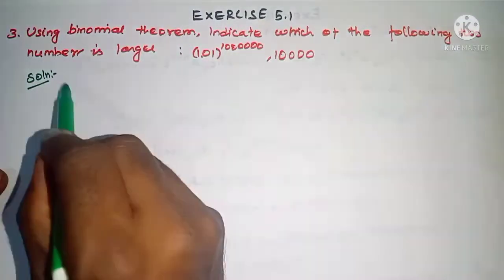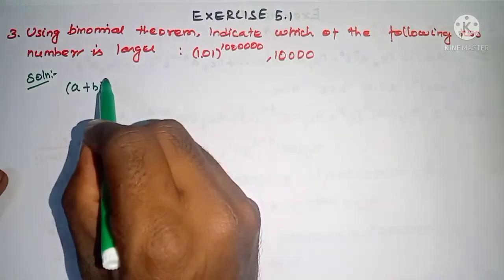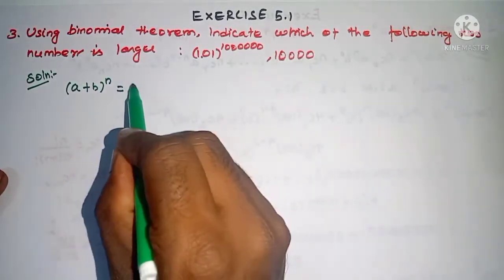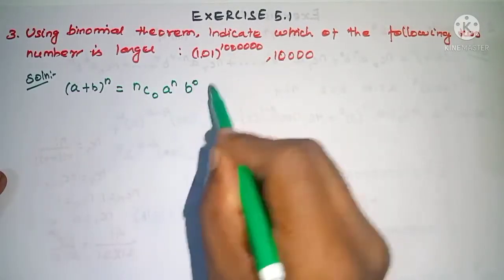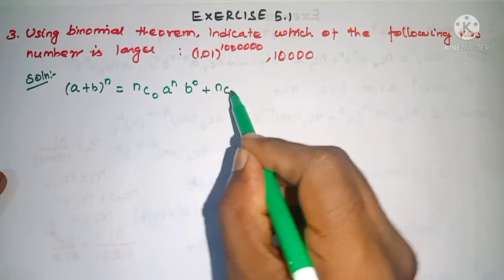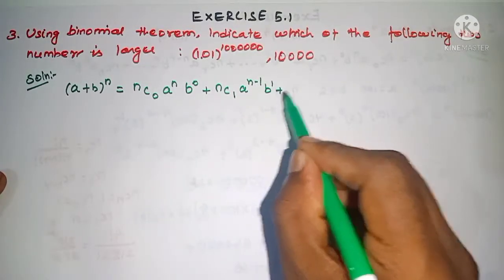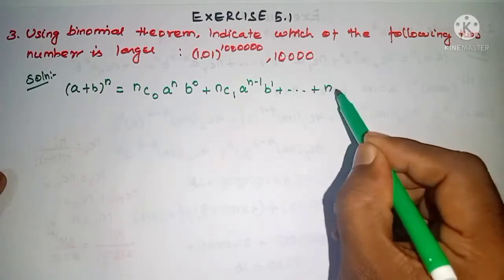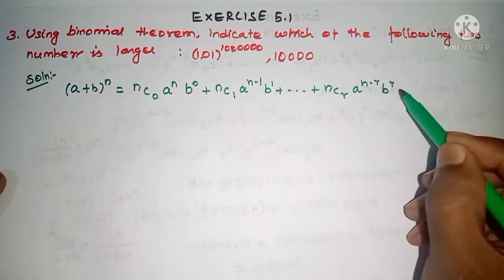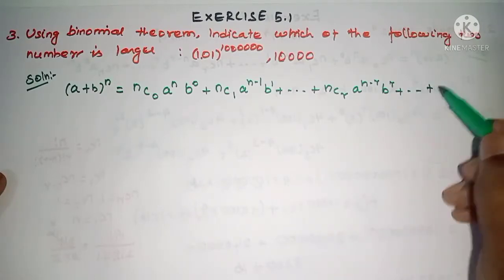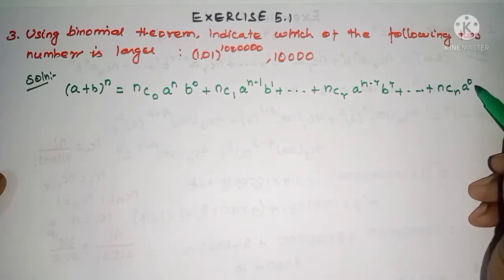Now we use the binomial theorem. (a + b)^n = nC0 · a^n · b^0 + nC1 · a^(n-1) · b^1 + ... + nCr · a^(n-r) · b^r + ... + nCn · a^0 · b^n.